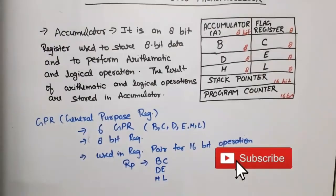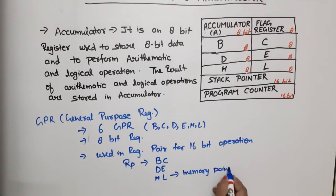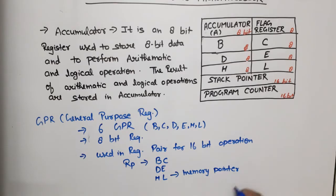The HL register pair is used as a memory pointer. When we program, we use it as a memory pointer and write it as M. For example, if we write INX M, it means we are incrementing the content of the HL pair by 1.